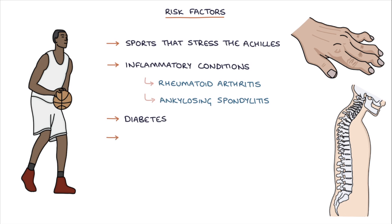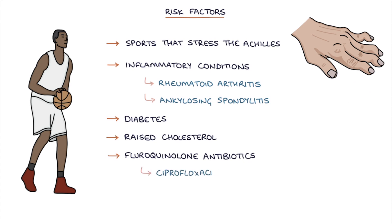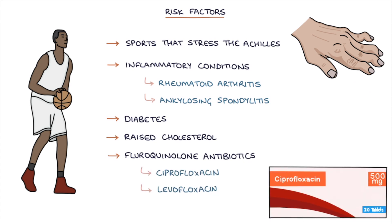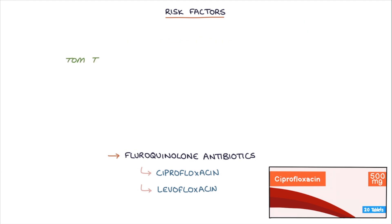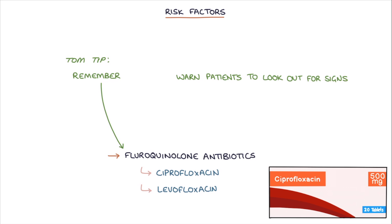Additional risk factors include diabetes, raised cholesterol, and fluoroquinolone antibiotics, for example ciprofloxacin and levofloxacin. It's worth remembering the association between fluoroquinolone antibiotics and Achilles tendinopathy — this is a common exam question. It's important to warn patients starting fluoroquinolone antibiotics to look out for signs of Achilles tendonitis and stop treatment if they occur.